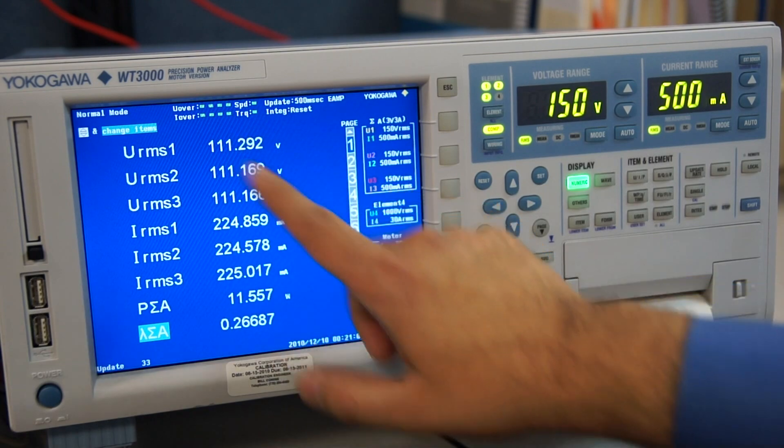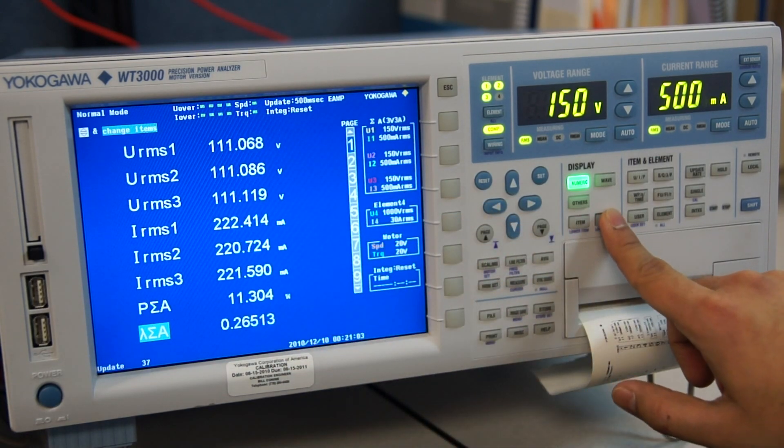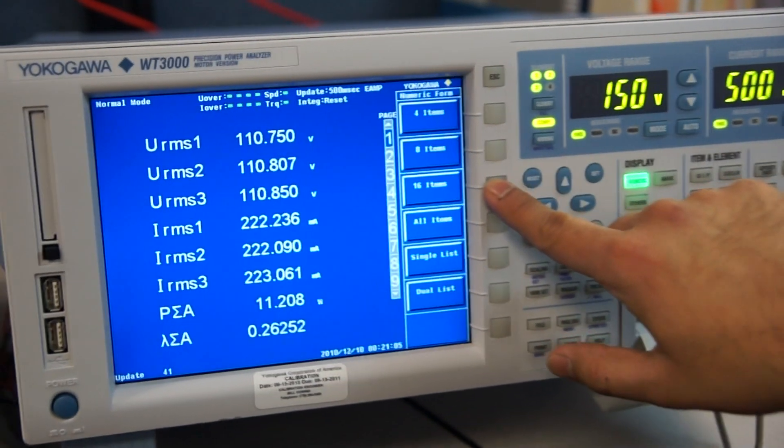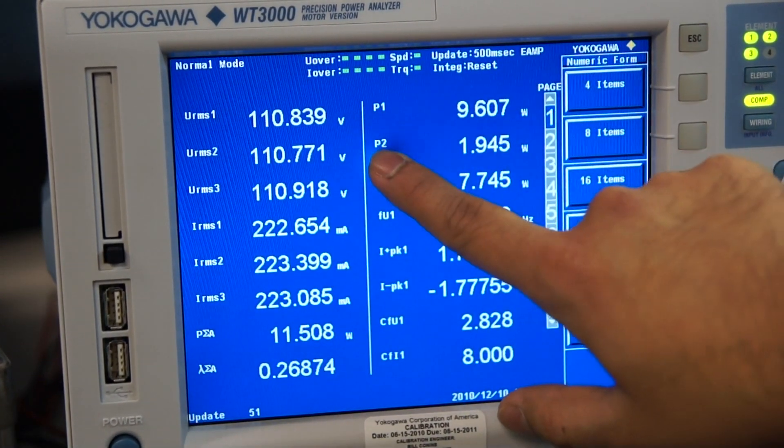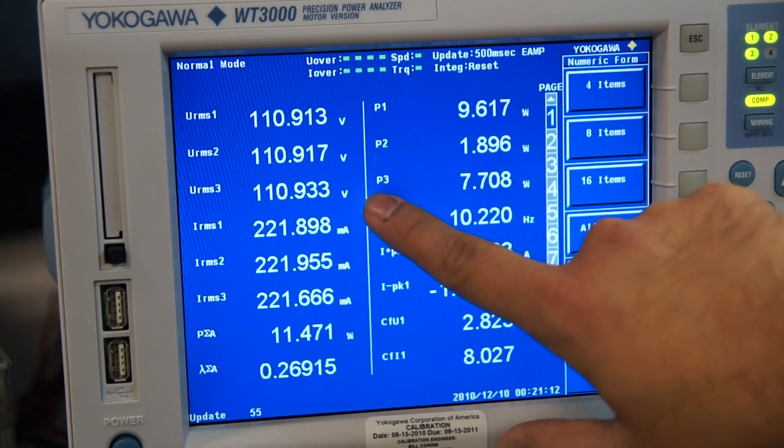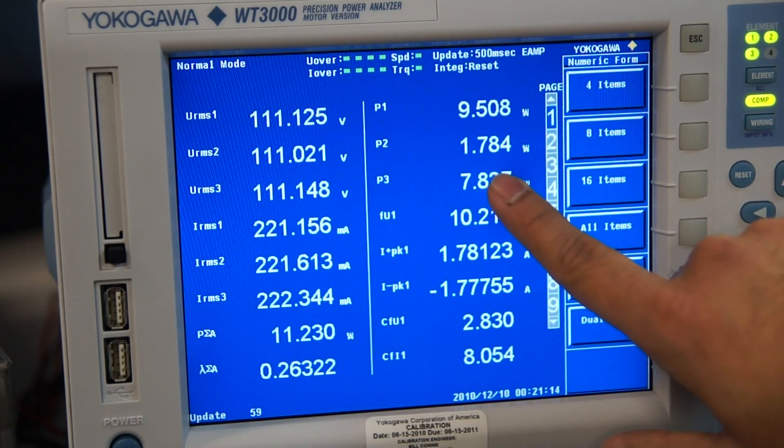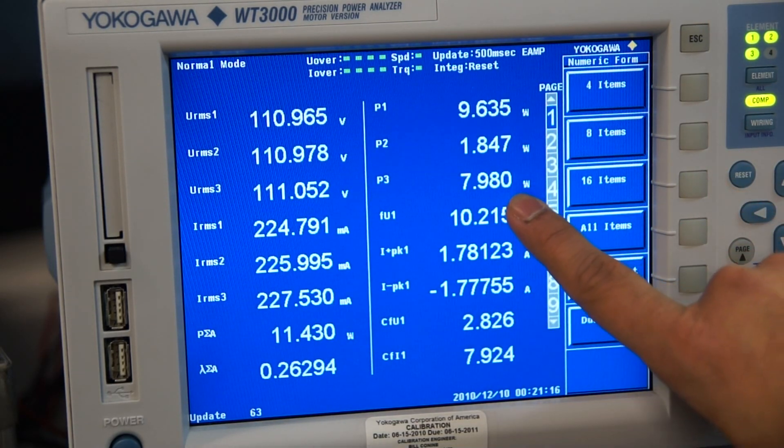Let's also verify that the individual phase powers are correct, so that way we can tell that the wiring is correct. You can see that phase one power is positive. Phase two power is also positive. And so is phase three power. That's the first thing that tells you that your wiring is correct.